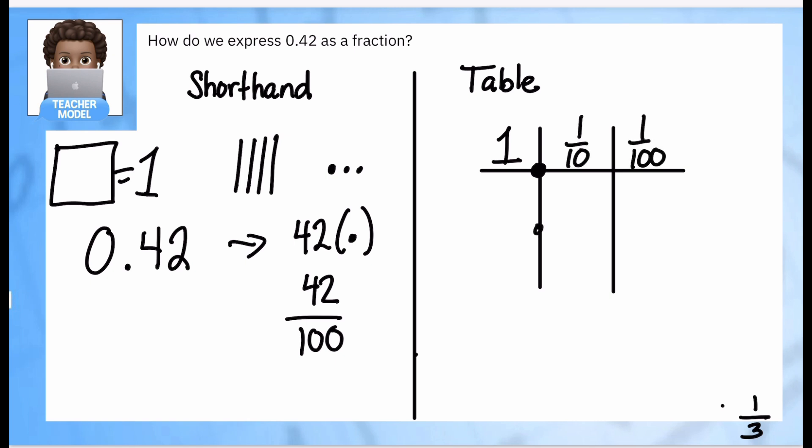and hundredths. And I'm just going to copy in a number: decimal point 42. And now again, I can see how many pieces I would have. Yes, I could have four tens and two hundreds, or I can have forty-two hundreds, which is also the right way to say it.